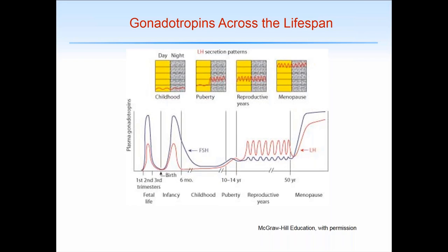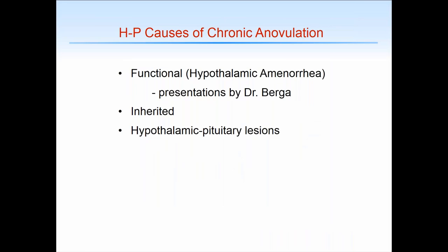There are multiple causes of chronic anovulation attributable to abnormalities in the hypothalamic-pituitary axis. The so-called functional causes, often termed hypothalamic amenorrhea, consist of eating disorders, stress, and excessive exercise — these were discussed at length by Dr. Berga. The other two causes I want to discuss are inherited abnormalities and hypothalamic-pituitary lesions.